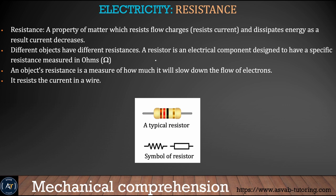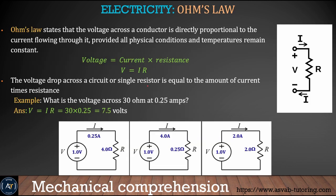Resistance is like friction in electricity — it is the property of a material that resists the flow of electrons. When you send electricity from one place to another, there is a voltage drop, which means some energy is lost due to resistance. The unit of resistance is the ohm. The relationship between current, voltage, and resistance is V = IR, known as Ohm's law, which states that voltage across a conductor is directly proportional to the current flowing through it.